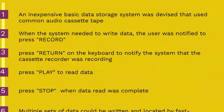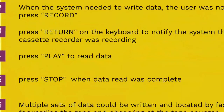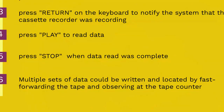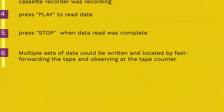When the system needed to read data, the user was instructed to press play on the cassette recorder. The system would listen to the sounds on the tape, waiting until a burst of sound could be recognized as the synchronization signal. The system would then interpret subsequent sounds as data. When the data read was complete, the system would notify the user to press stop on the cassette recorder. It was primitive, but it worked.